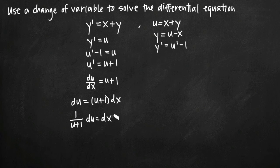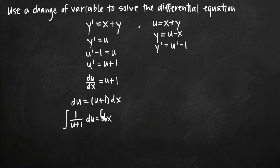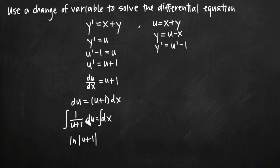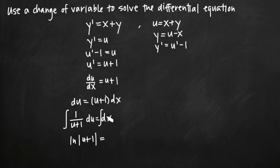We'll divide both sides by the quantity u plus 1 and we'll get 1 over u plus 1 du equals dx. And now we've separated our variables — everything on the left hand side is in terms of u, everything on the right hand side is in terms of x. As with any separable differential equations problem, our next step is to integrate both sides. When we do that, we'll get the natural log of the absolute value of u plus 1, since the integral of 1 over x is natural log of x. On the right hand side, the integral of dx is just x, and we add c to account for our constant of integration.